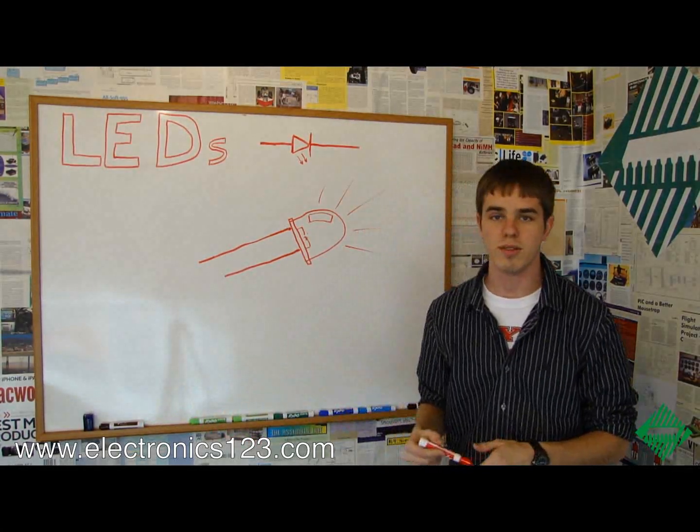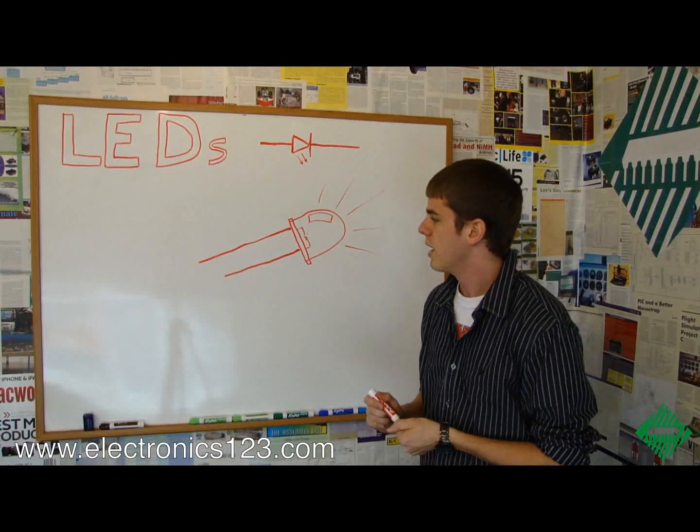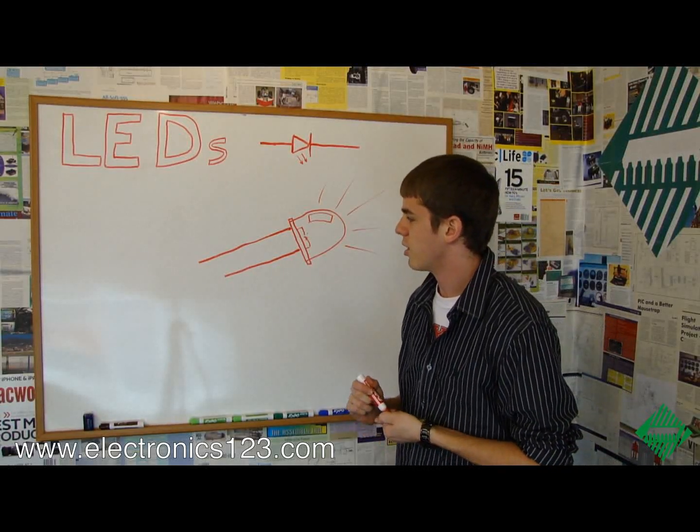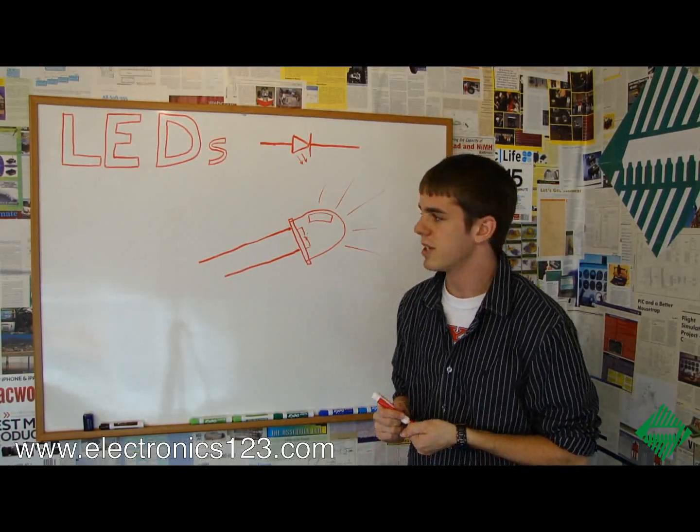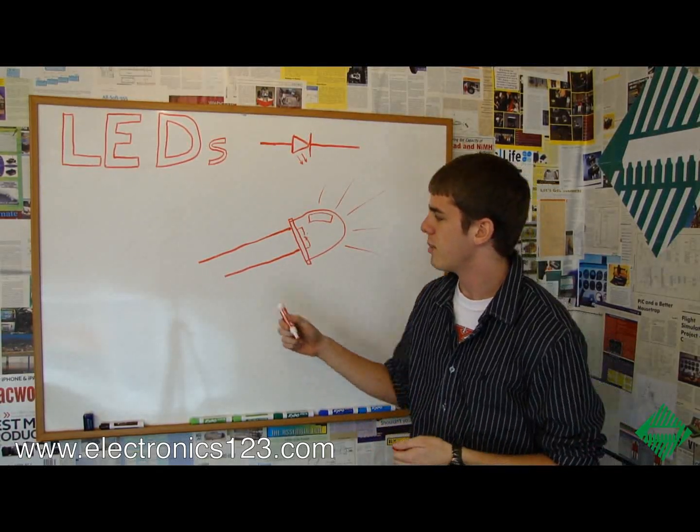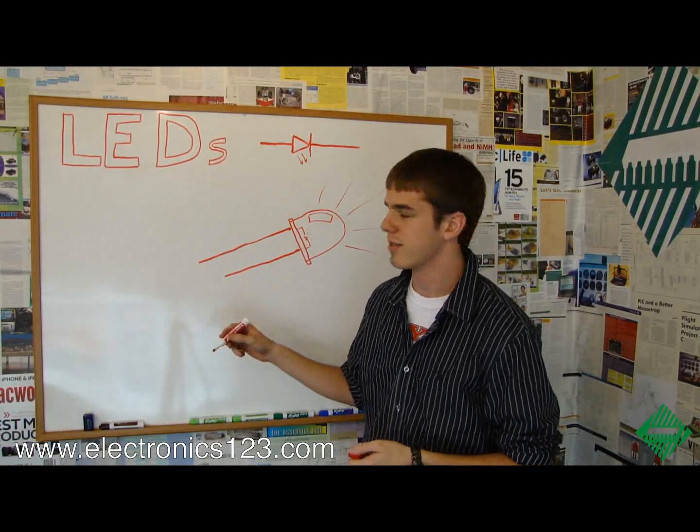There are a few things about LEDs that set them apart from other types of light bulbs, such as incandescent. Primarily, one of the key differences is that they're polarized, which means they have a positive and a negative side.